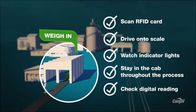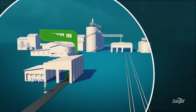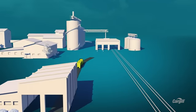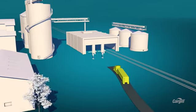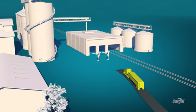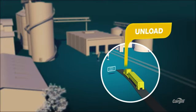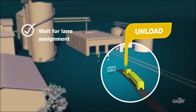Once your delivery is probed, graded, and weighed, head over to the unloading building and stop at the lane assignment monitor. If your load has passed the grade, the monitor will display your appointment number and card number along with your assigned lane.